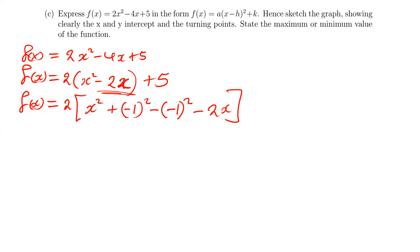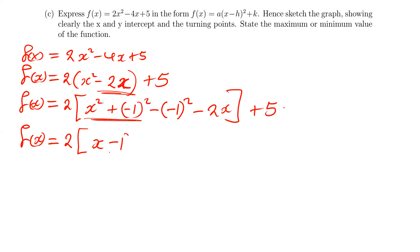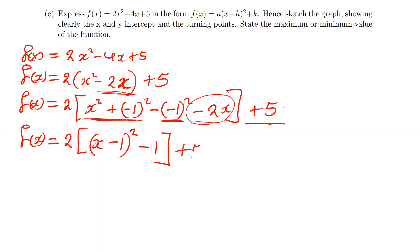We close the inner bracket and write plus 5 outside. Then we complete the square of the first part by writing (x − 1)², and subtract (−1)² which gives positive 1. So we have f(x) = 2[(x − 1)² − 1] + 5. Distributing the 2 gives f(x) = 2(x − 1)² − 2 + 5.